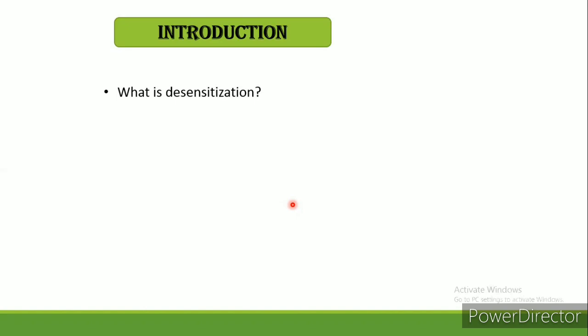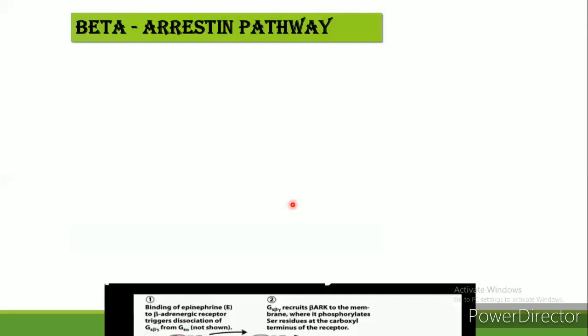The beta-adrenergic system has both resensitization and desensitization. Here we focus on desensitization — that is, how to terminate the beta-adrenergic response. Two proteins are used in this pathway: beta-adrenergic receptor kinase (beta-ARK) and beta-arrestin. The beta-adrenergic receptor is desensitized by phosphorylation and by association with arrestin. I will explain the function of these two proteins from the beta-adrenergic pathway diagram.